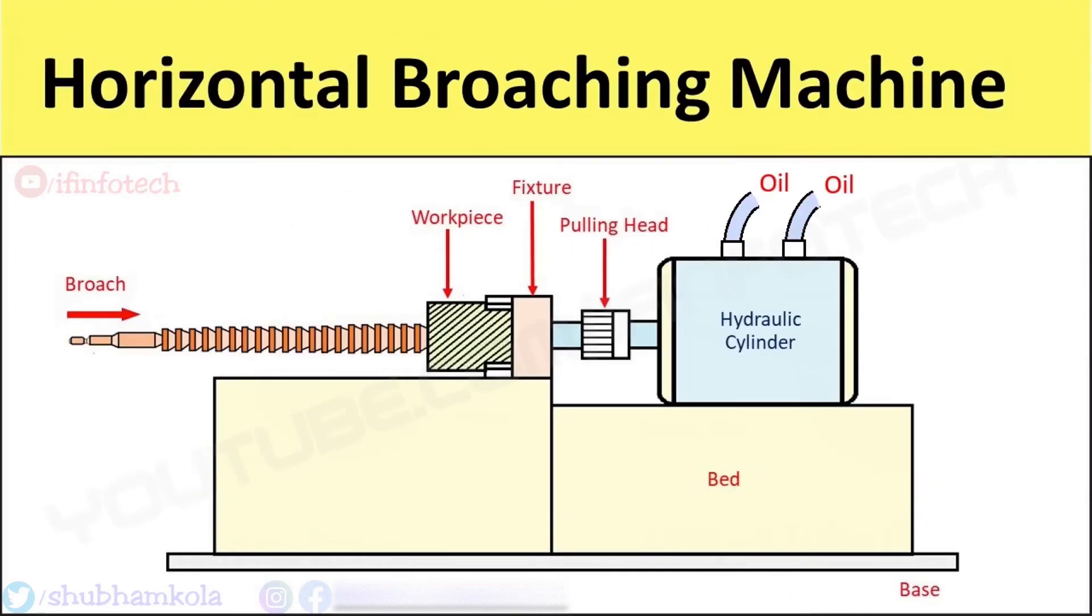Now we see the advantages of the horizontal broaching machine. First, the horizontal broaching machine has a high production rate. The job prepared on the horizontal broaching machine is done in one stroke. It has high tool life.